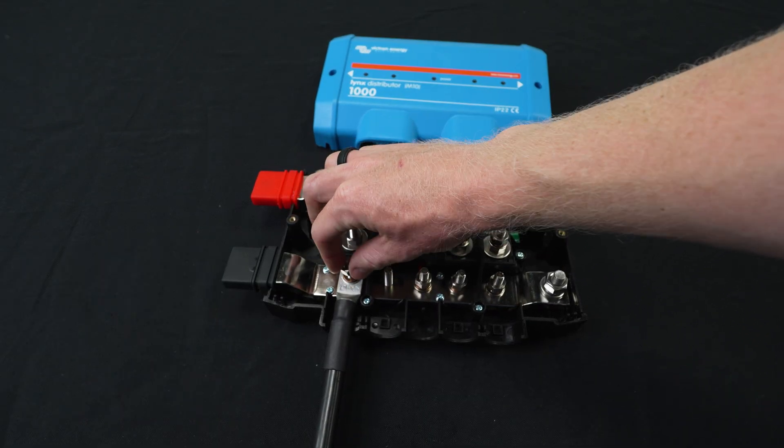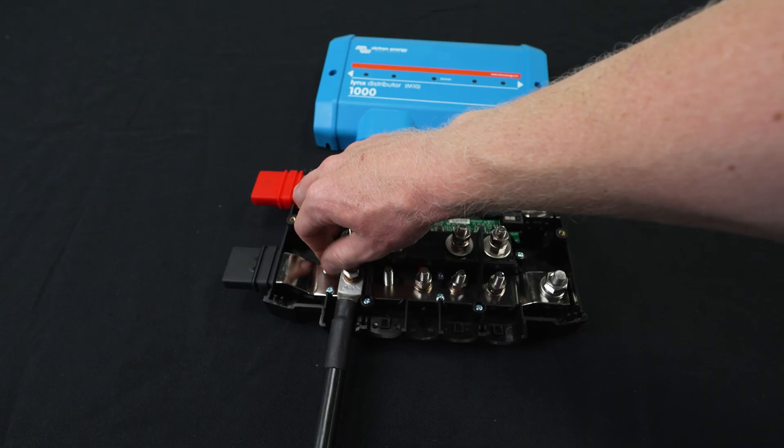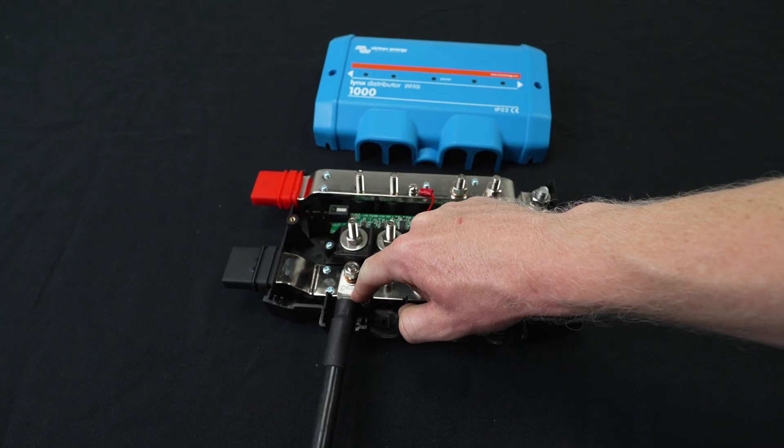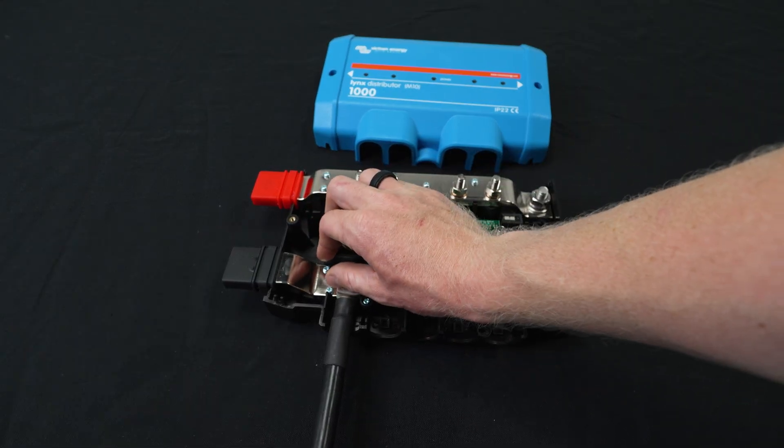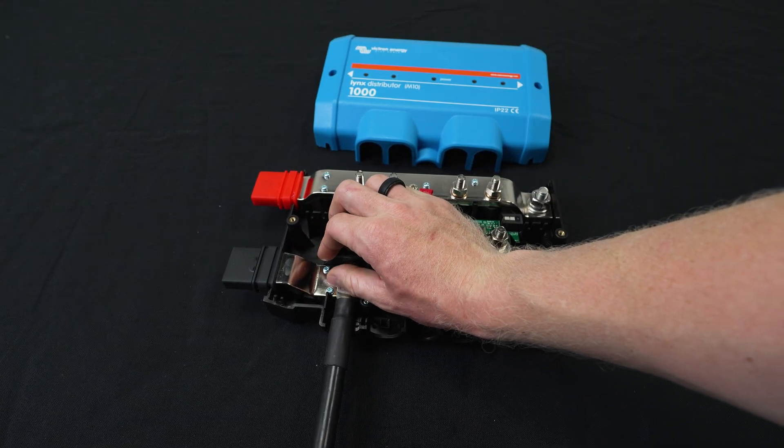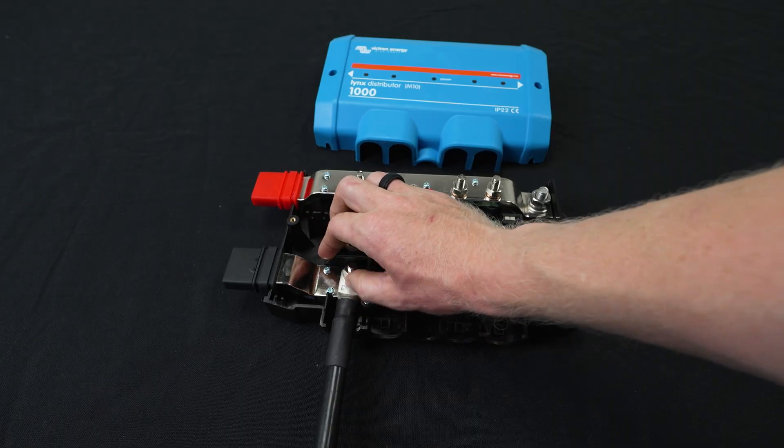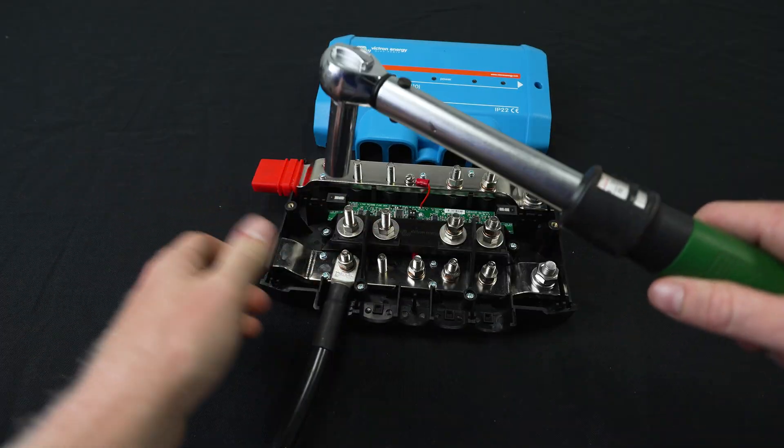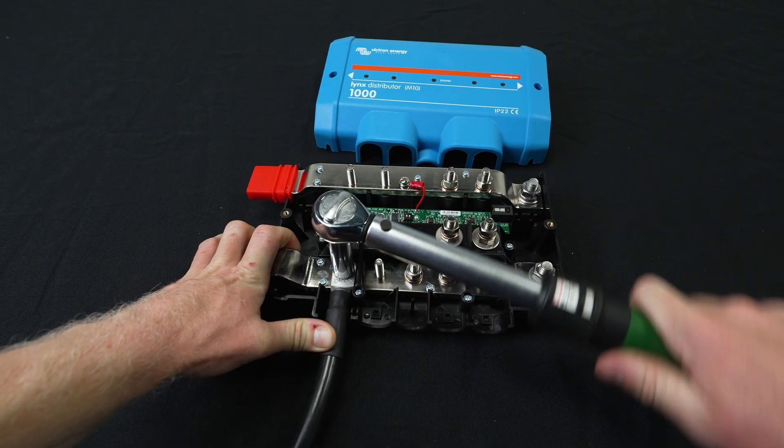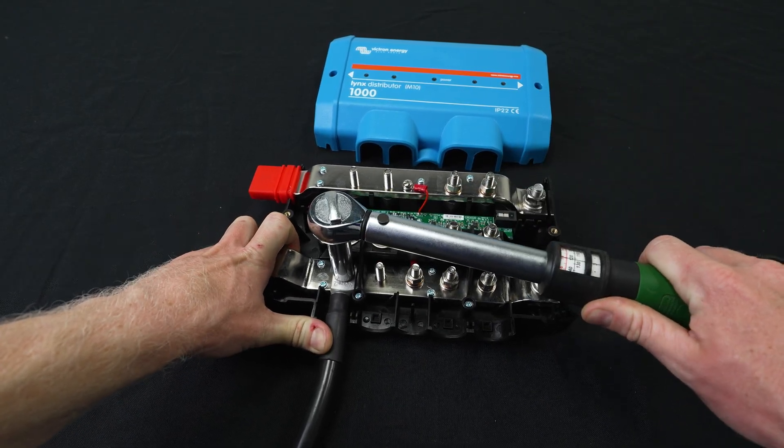So you never want anything to go between the current carrying conductor, which is the lug, and the bus bar. So that's why we put the lug down first, attach it directly to the bus bar. Nothing in between those two causing extra resistance, extra heat. 14 newton meters. Perfect.